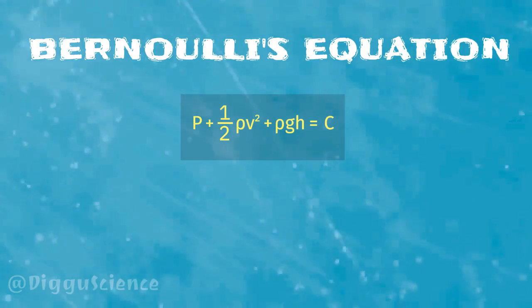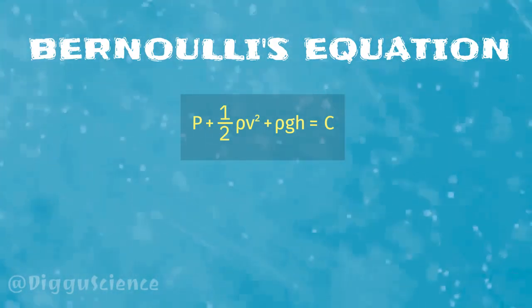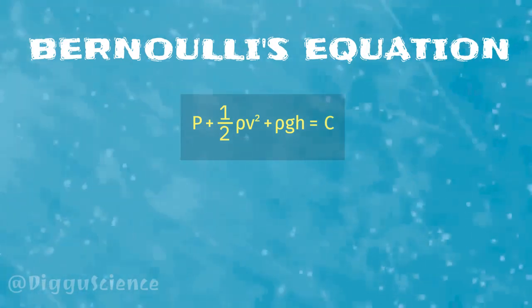The statement of Bernoulli's equation in the form of a mathematical equation can be written as P plus half rho V squared plus rho g h is a constant.